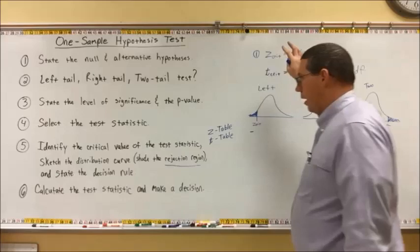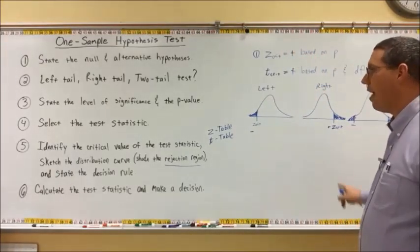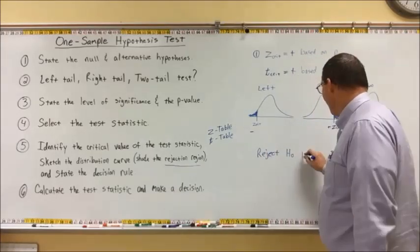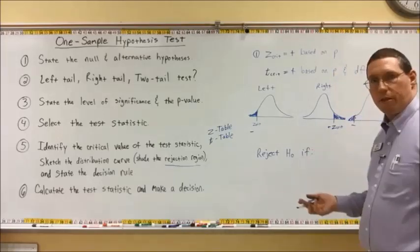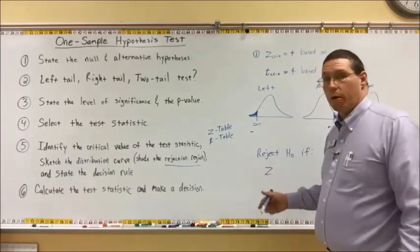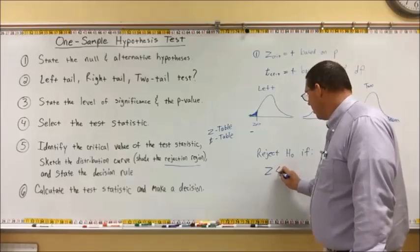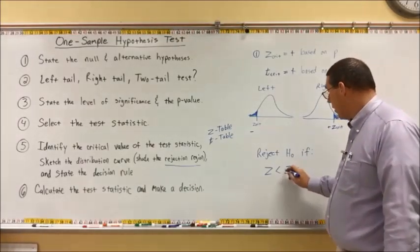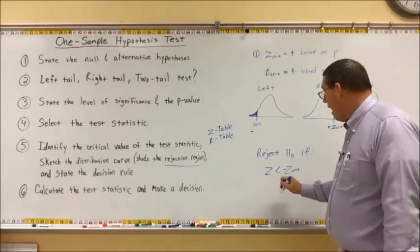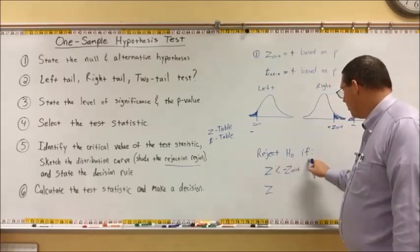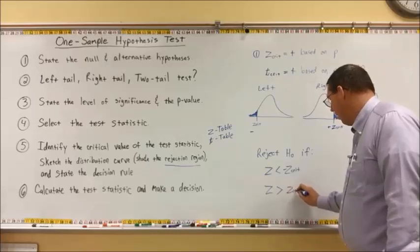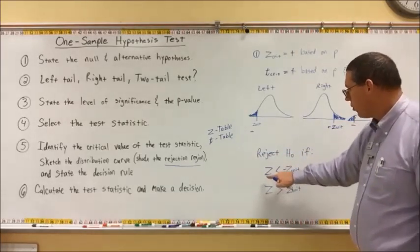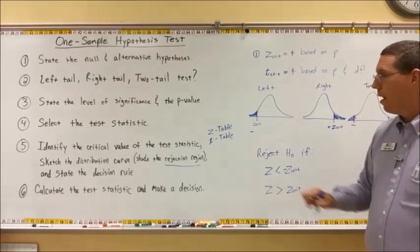Third part of step five: state the decision rule. You write 'Reject H sub 0 if...' — then one of three things. For a left-tail test: reject H sub 0 if z is less than the critical z value (a negative number). For a right-tail test: reject H sub 0 if z is greater than the critical z value. For a two-tail test: reject H sub 0 if z is less than the negative critical value or z is greater than the positive critical value. That is step five.